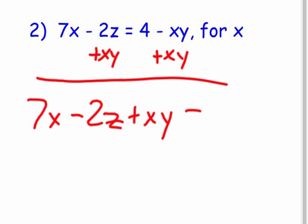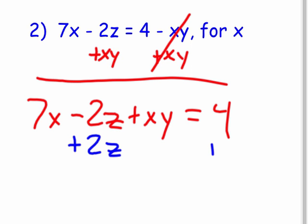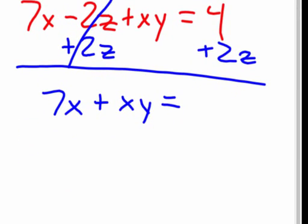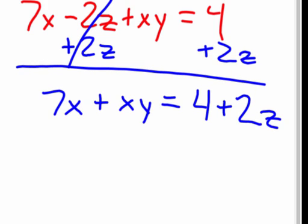When you move something from one side to the other, you just add or subtract using the inverse operation. Now I need to get rid of the -2z, so I add 2z to both sides. That cancels, and I bring down 7x + xy equals 4 + 2z.